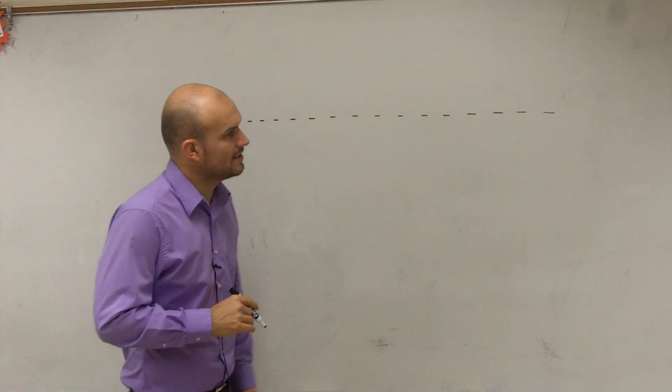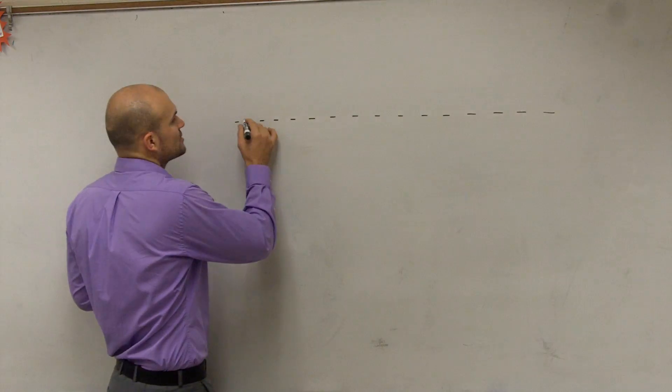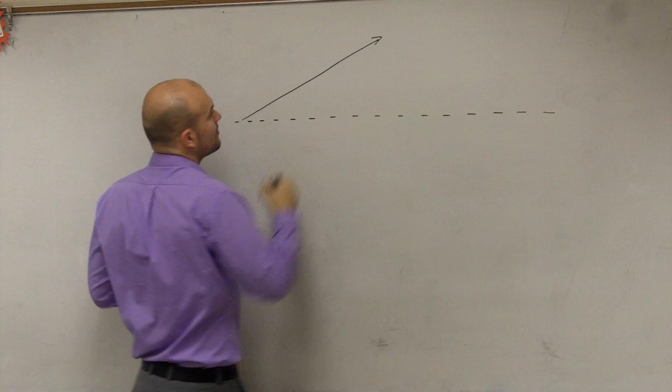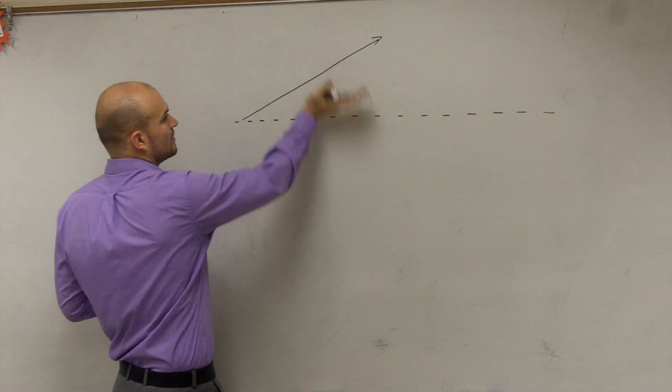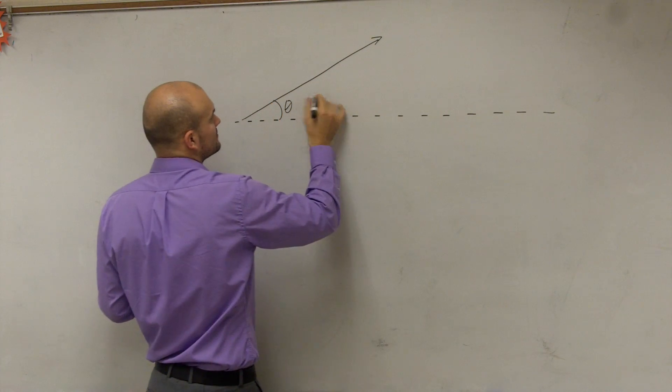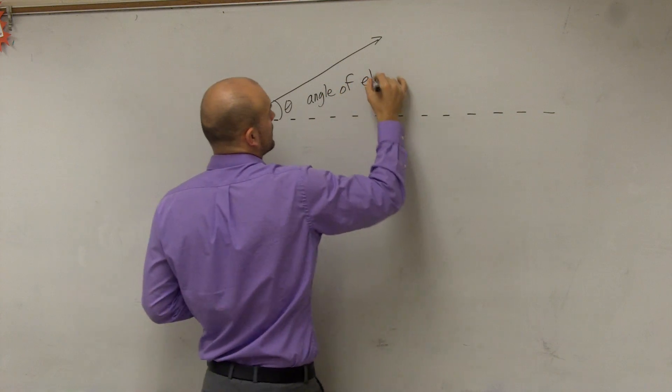When I talk about an angle of elevation, what I'm saying is from a horizontal line, the angle of elevation is going to go up in the upward direction from the horizontal line. This, which we call theta, would be your angle of elevation.